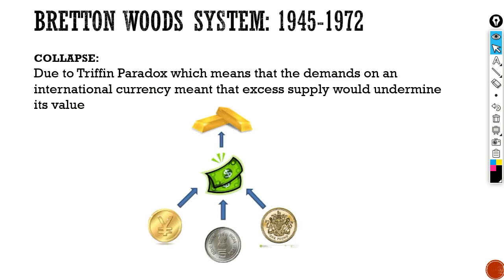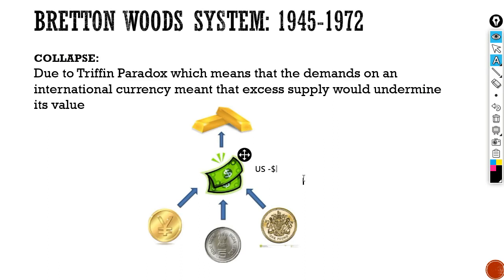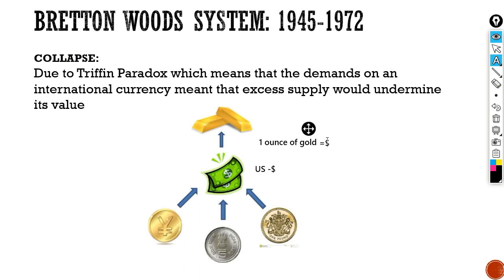Now let us understand how this system worked. Before the Bretton Woods System, Britain was considered one of the most powerful nations due to its huge gold reserves. However, after the collapse of the gold standard, the USA was considered the most powerful nation and the dollar the most powerful currency. Under this system, the dollar was pegged to gold, and at the start, one ounce of gold was pegged at 35 US dollars.